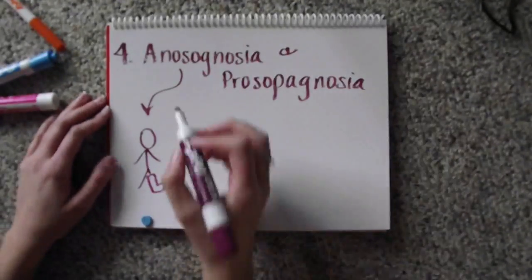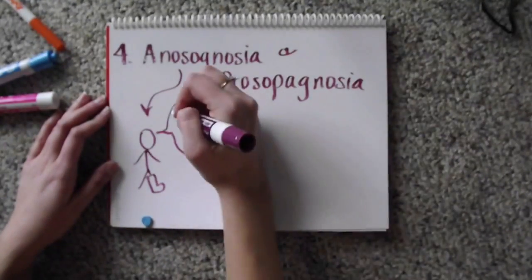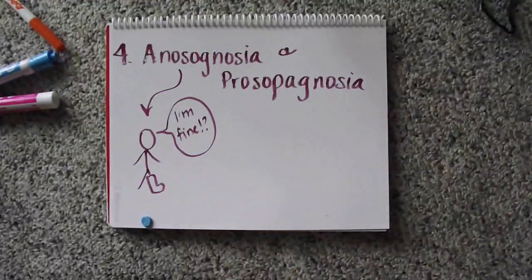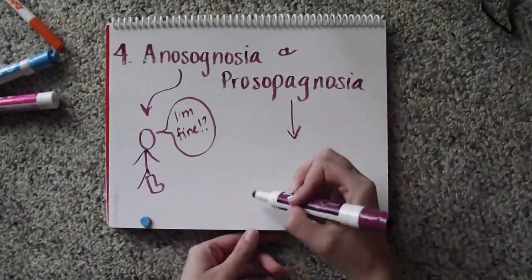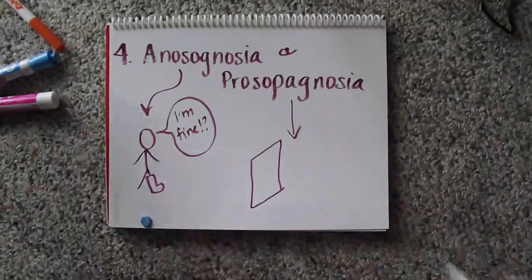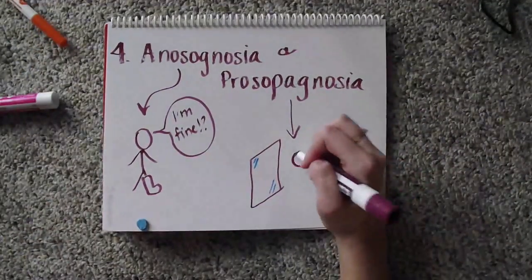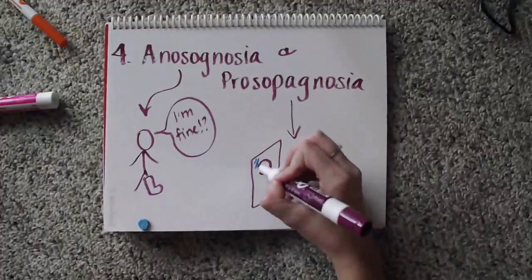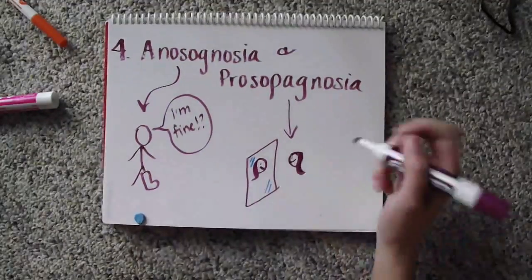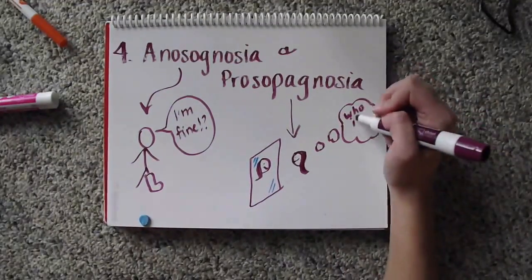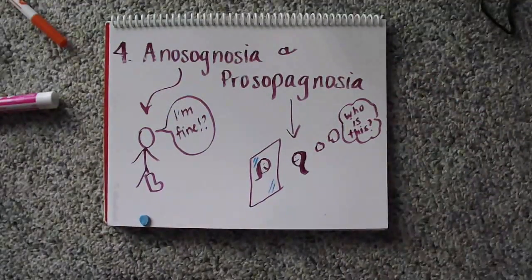Anosognosia is an inability to recognize a defect such as paralysis on one side of the body. The individual may deny the affected part or feel disconnected from that part of their body. Prosopagnosia is an inability of an individual to recognize faces, even their own.